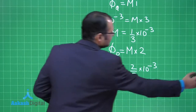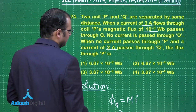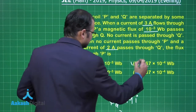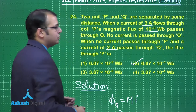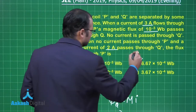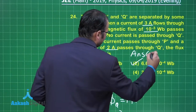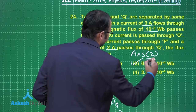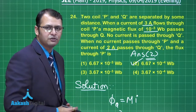This equals 6.67×10⁻⁴ Weber. So the answer to this question is option number 2. I hope you have understood this question very well.